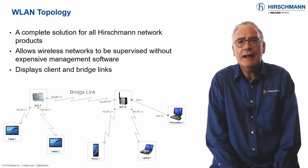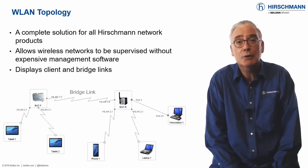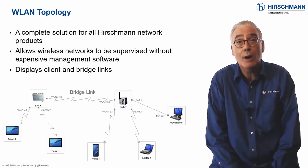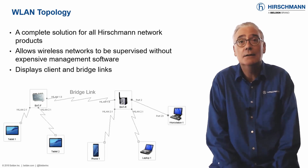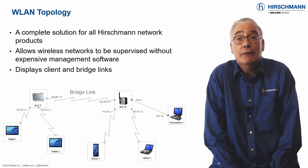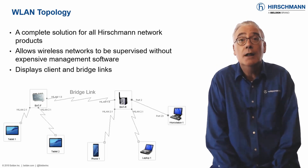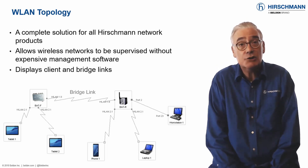Industrial HiVision uses the same display characteristics for both cabled and wireless links. So if wireless bridge links are being used as backup connections, for example in a rapid spanning tree network, they are displayed as dashed lines.